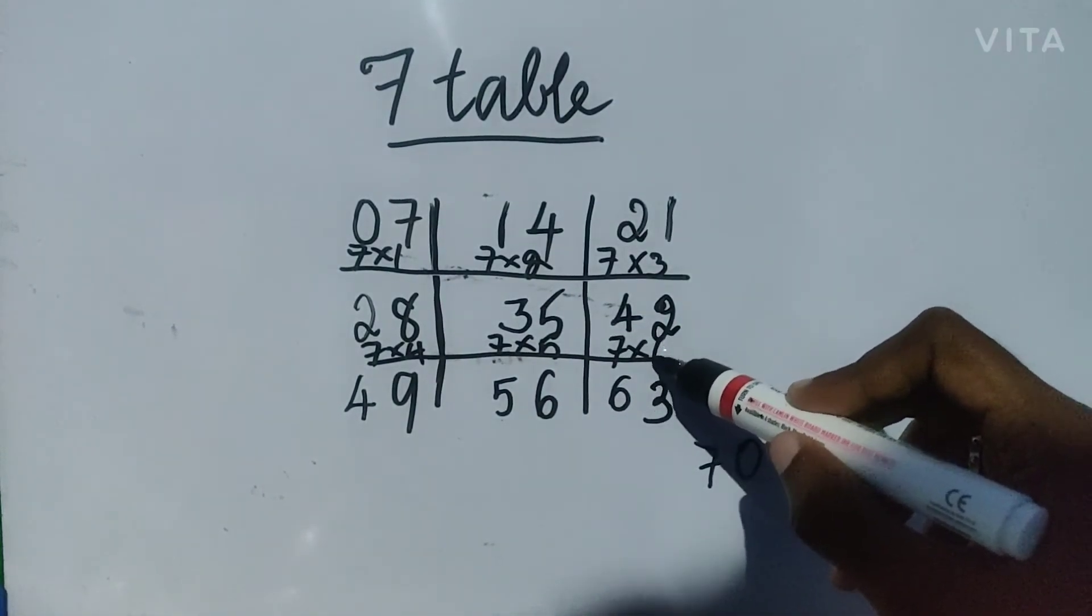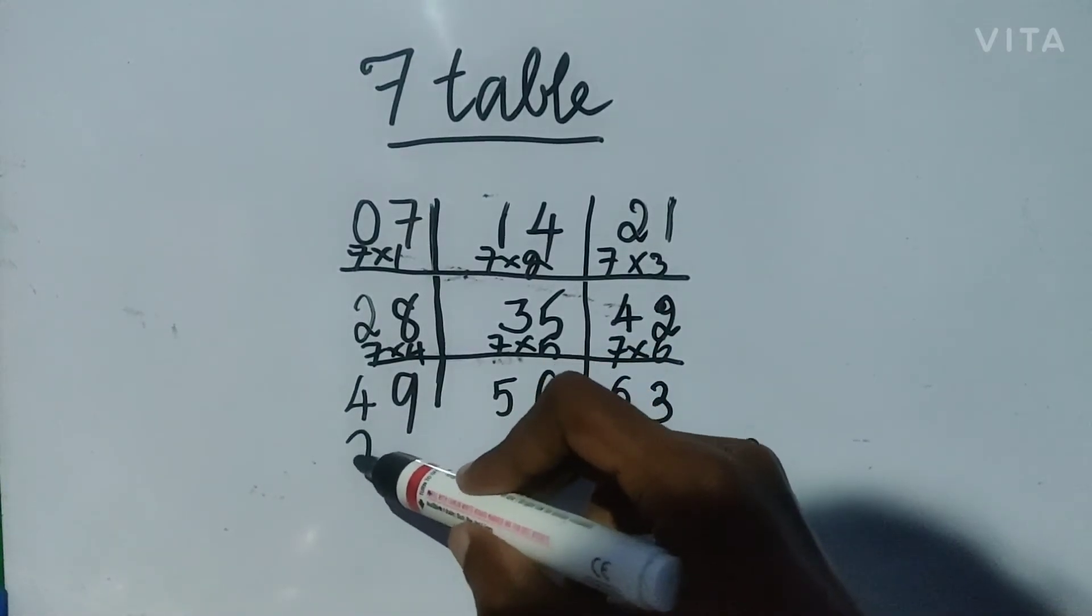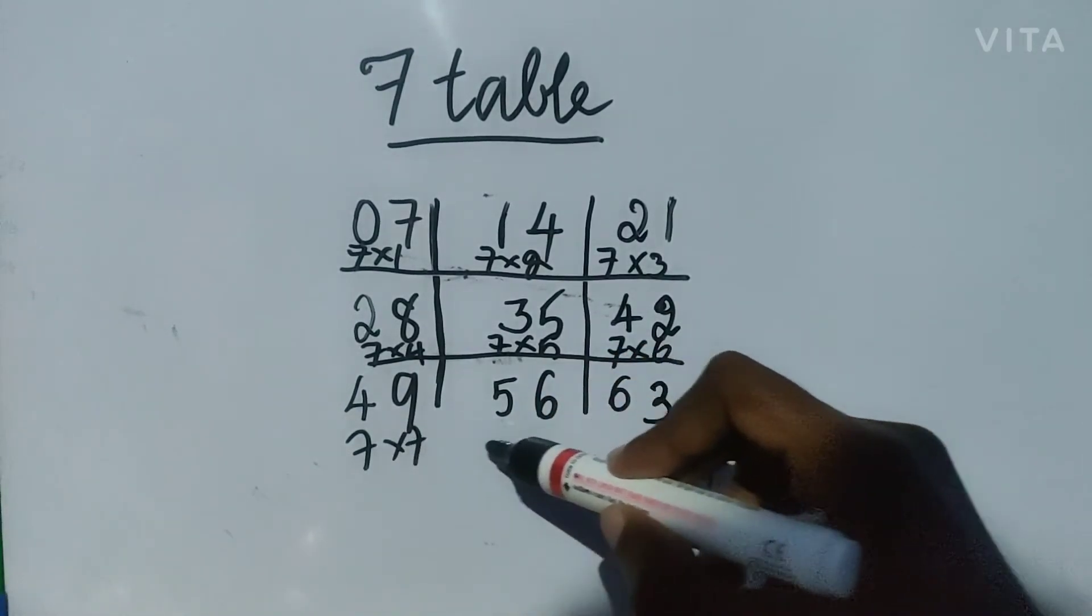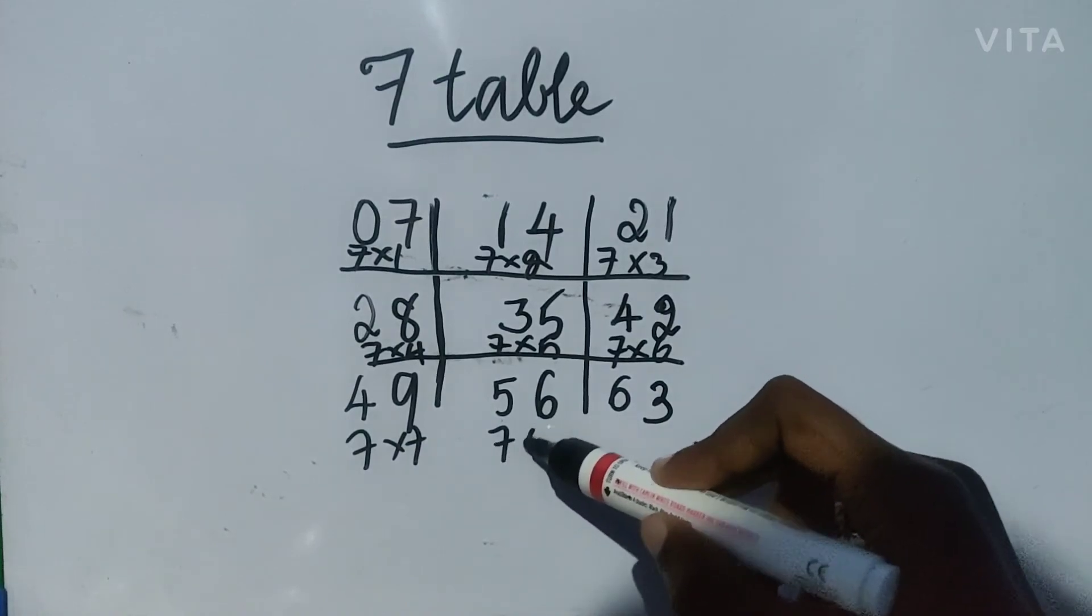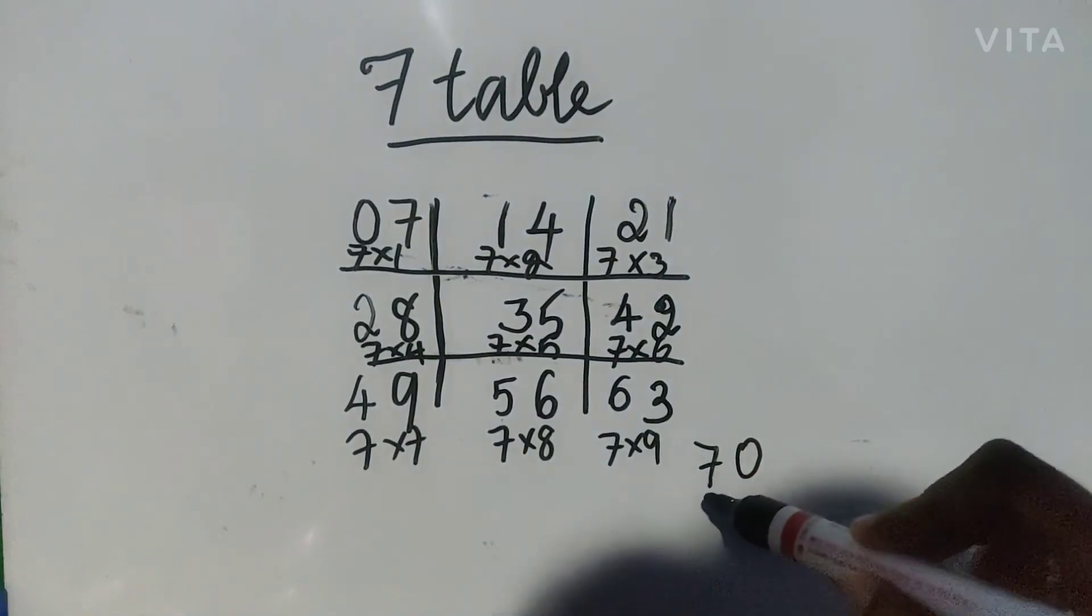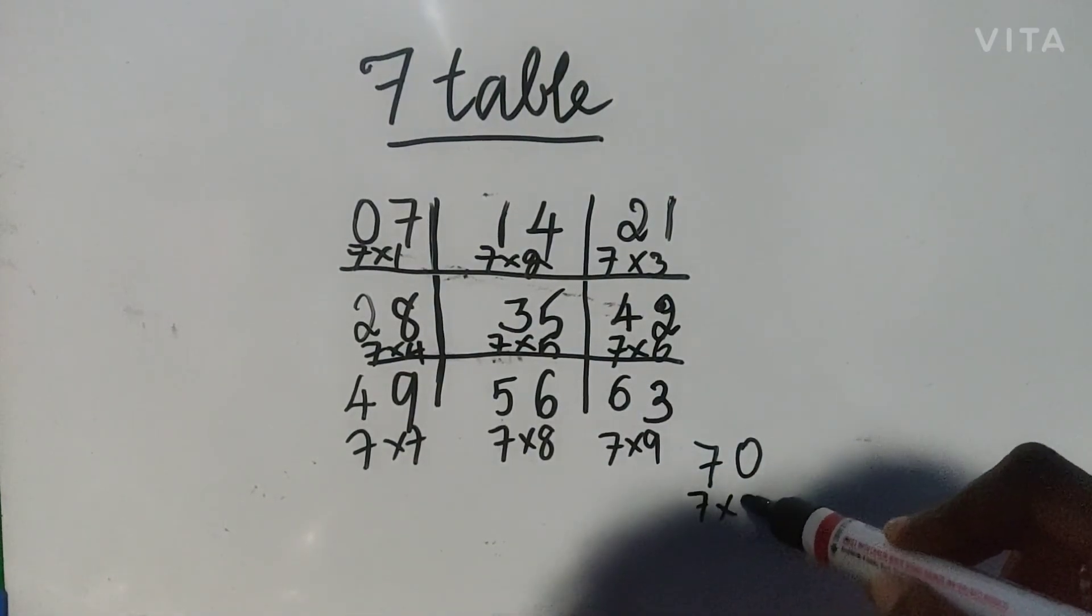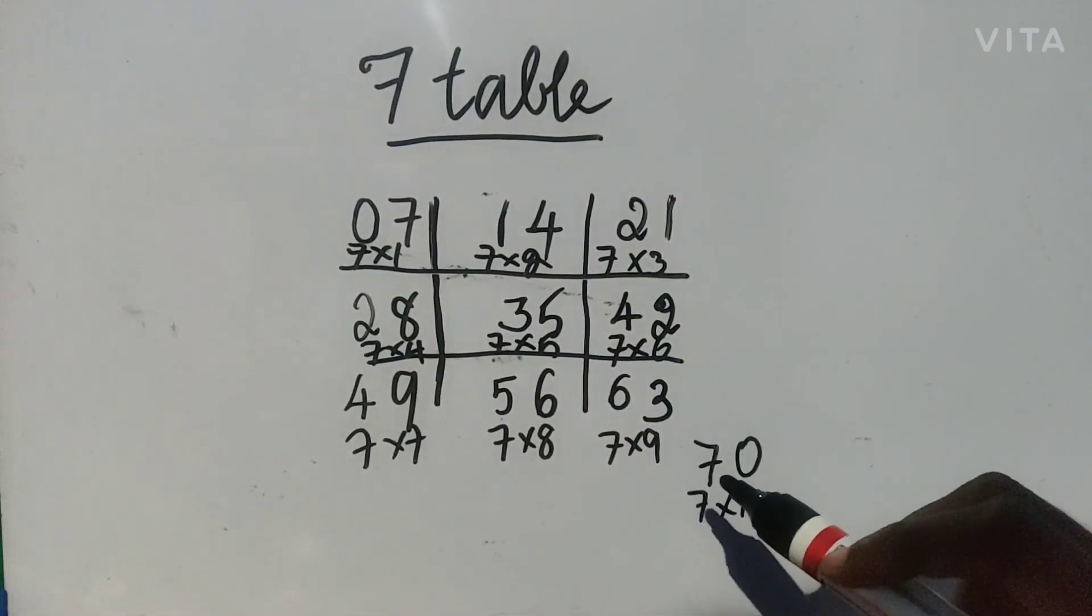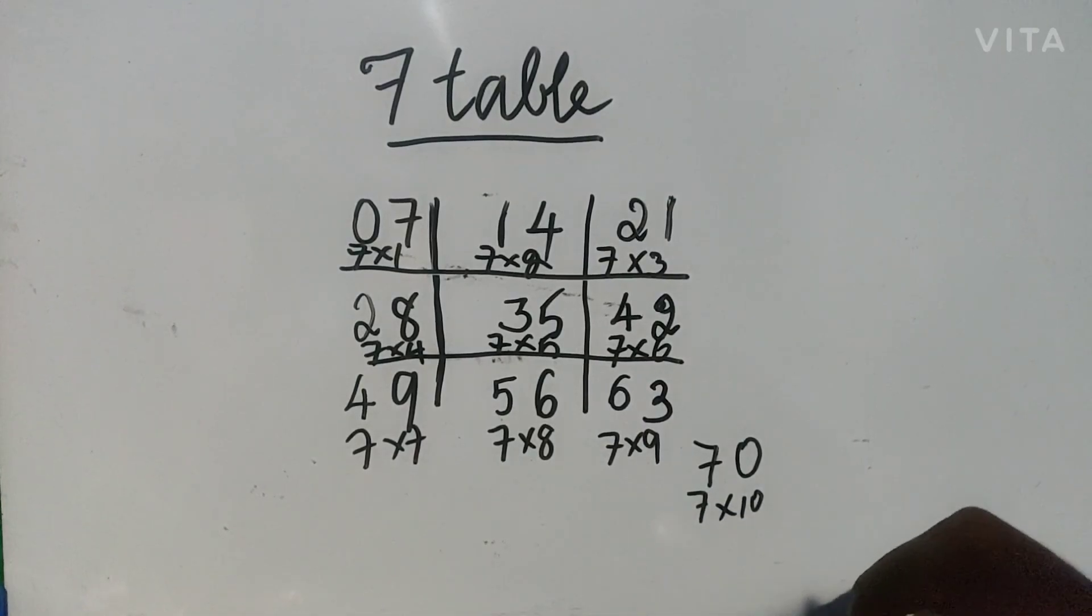7 sixes are 42, 7 sevens are 49, 7 eights are 56, 7 nines are 63, 7 tens are 70. So this is an easy trick to learn 7 table.